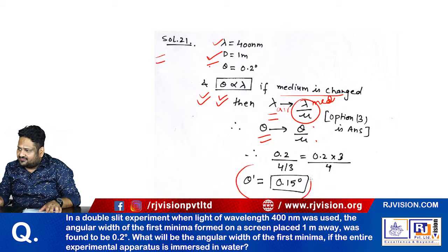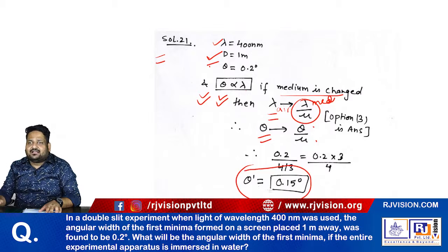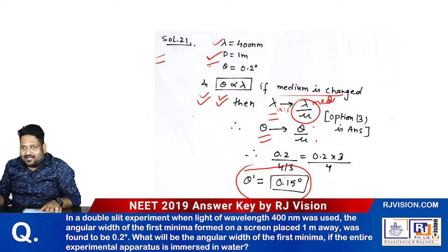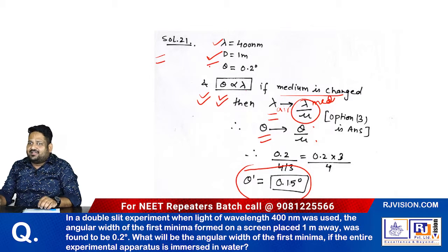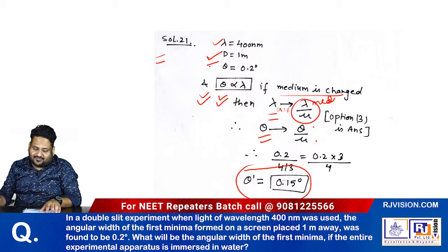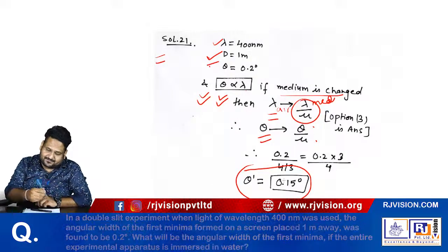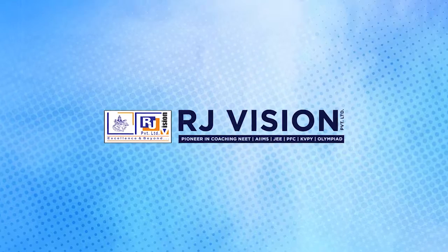After the calculation, we get the new angle value equal to 0.15 degrees. Your new angular width is 0.15 degrees. Out of the options, the correct option is your third option, option B.